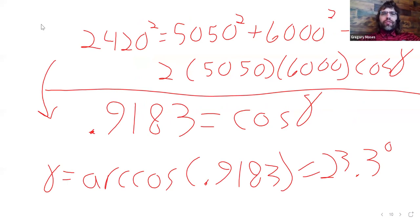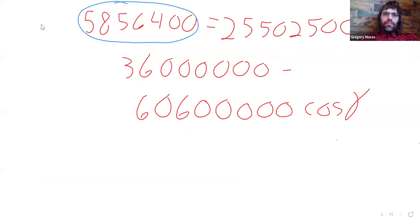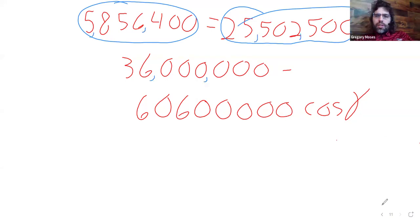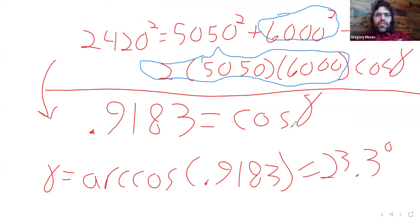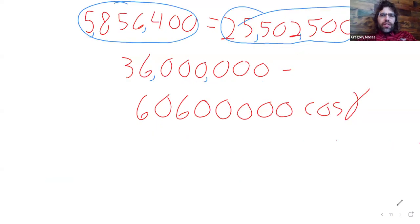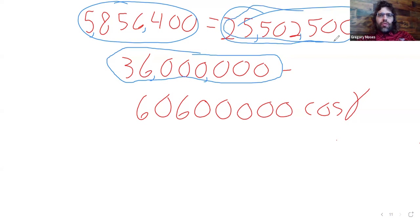On the right, we squared 5050. Then we squared the 6000. We multiplied this out, and that gave us this. We can subtract terms over to the left.